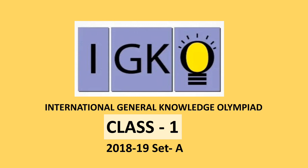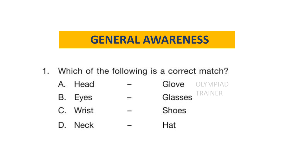This will give you an idea of what kind of questions are asked in IGKO. The question paper comprises 4 sections: General Awareness, Current Affairs, Life Skills, and Achievers section. Each question in the Achievers section carries 2 marks, whereas all other questions carry 1 mark each. Let's start with the first section, General Awareness.